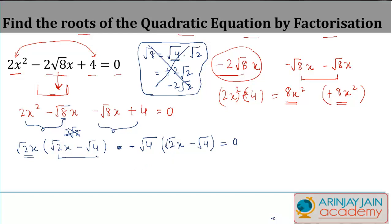Taking this as common, I get √2x - √4, and here again I get √2x - √4 = 0. Since both of them are common, we can just write this simply as (√2x - √4)² = 0, or √2x - √4 = 0.